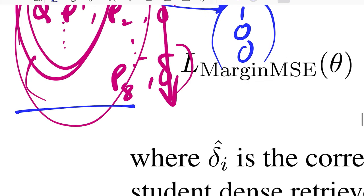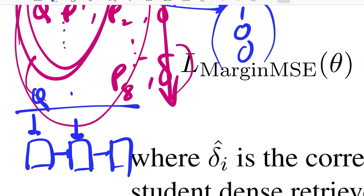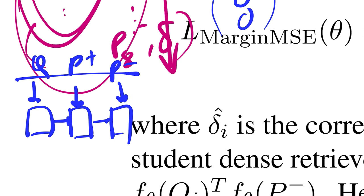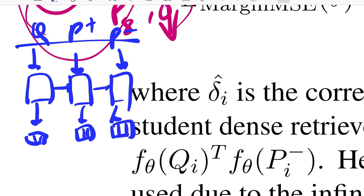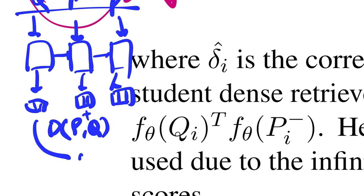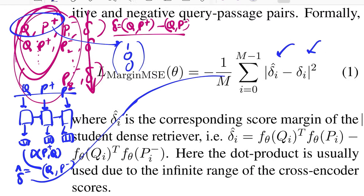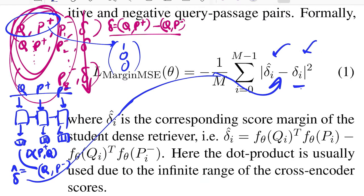So in this, what you do - once this dataset is created, you pass it to your encoder system that share weight. Where this takes in query, this takes in positive passage, this takes in negative passage. You get a pooled representation over here of the vector representations of Q, P positive, and P negative. You take the dot product for Q and P positive, and also between Q and P negative, take their difference, and that is your delta hat.